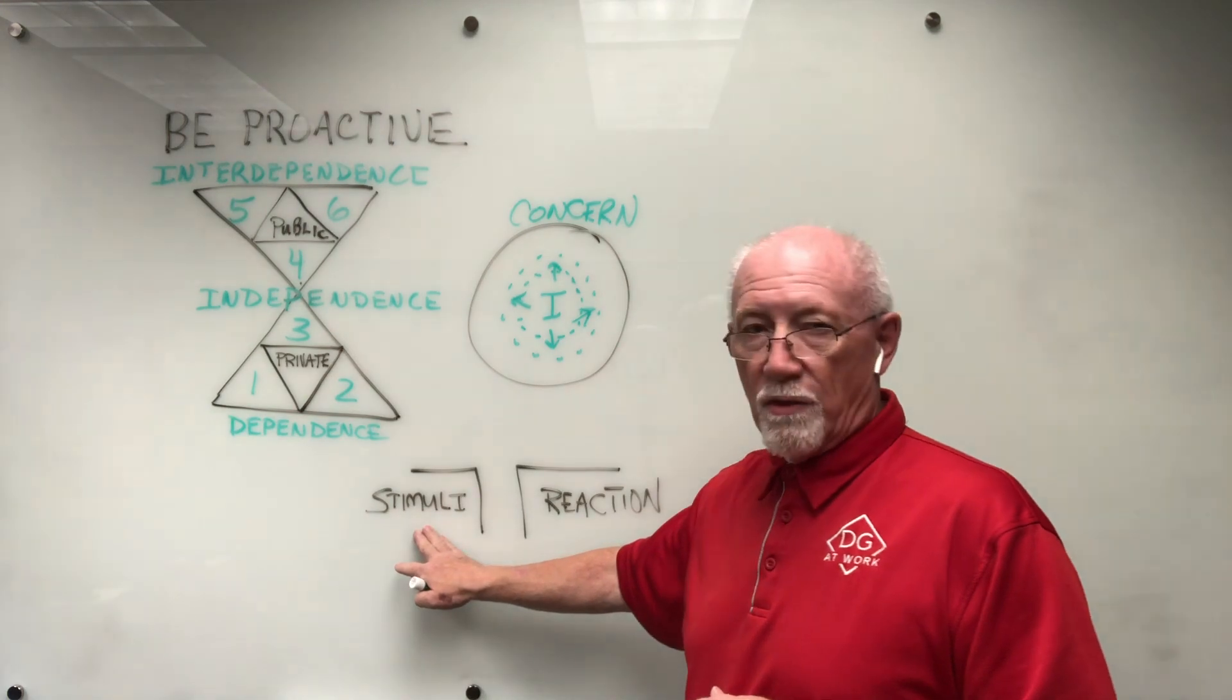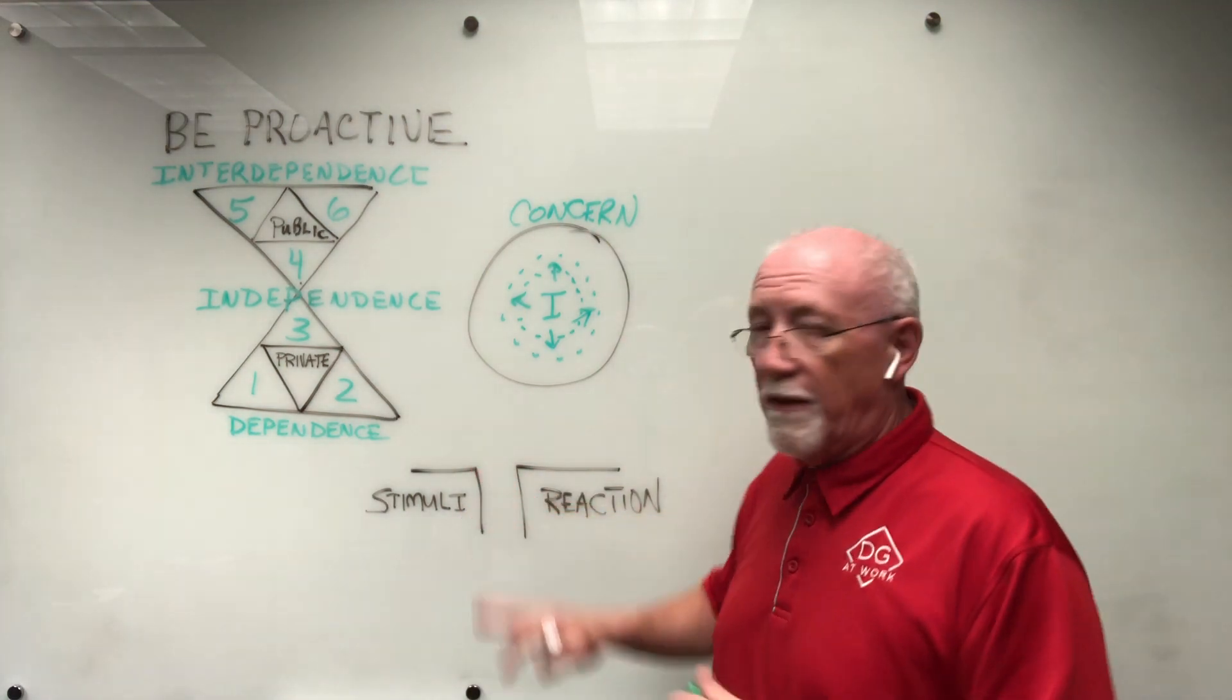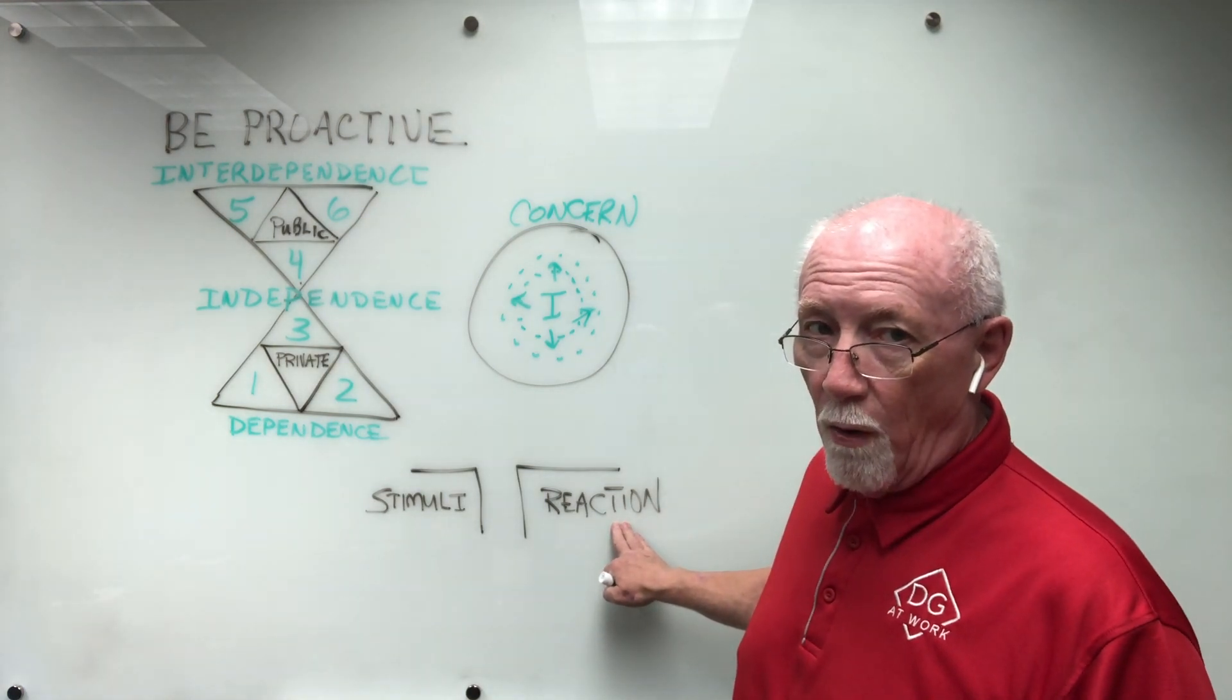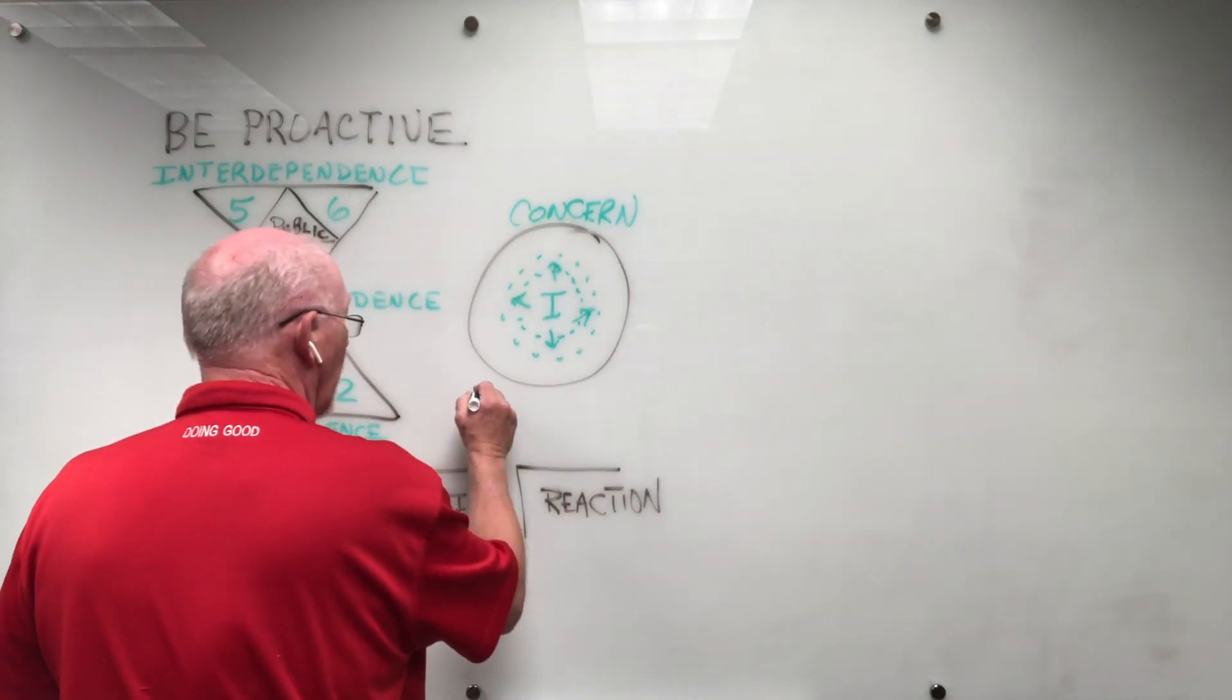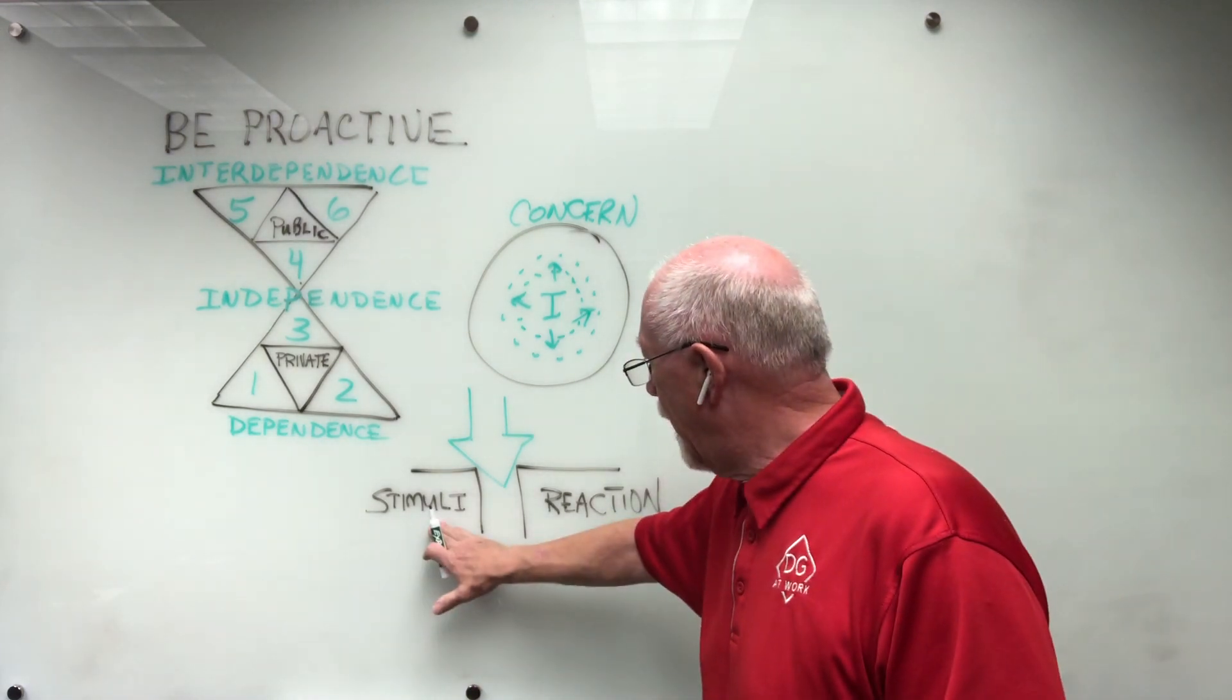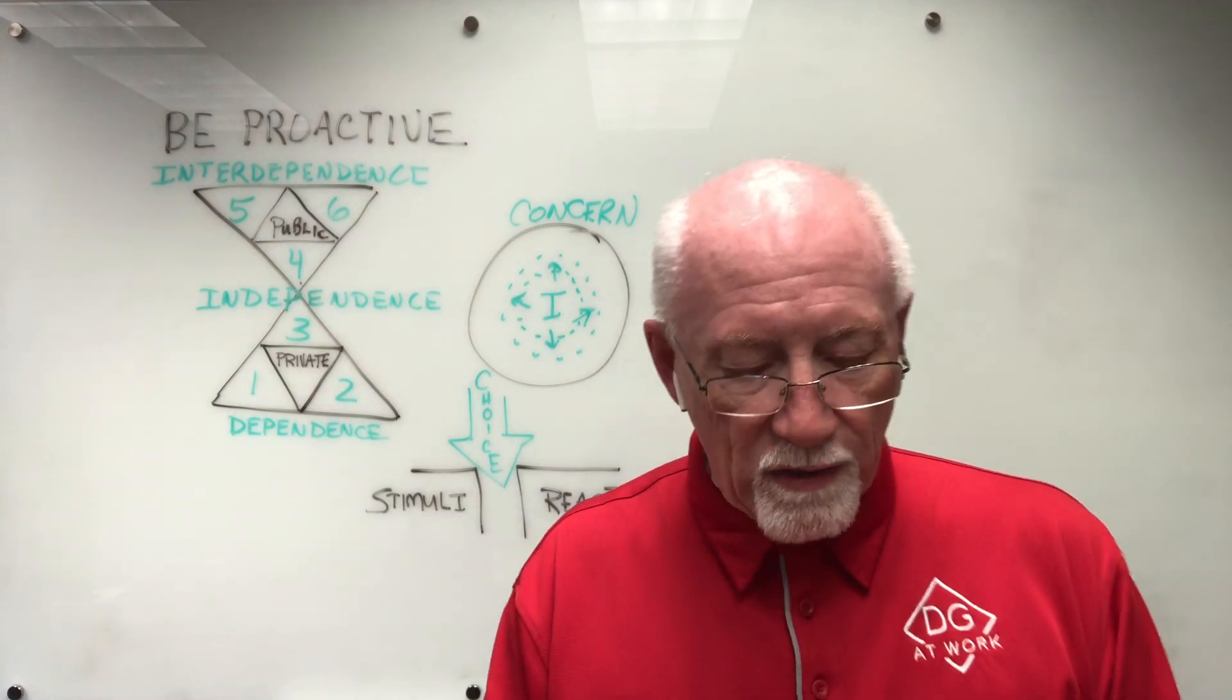We understand that certain things, certain stimuli, come into our lives and cause us to react. And what he says is effective people understand that between stimuli and reaction, there's something that you can control, and effective people control this well. That's right here—this arrow that I'll draw right here goes right in that slot. And what that is in between the stimuli and the reaction is your personal choice. You have a choice of how you react to any situation.